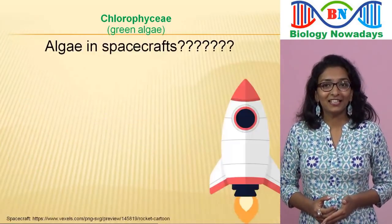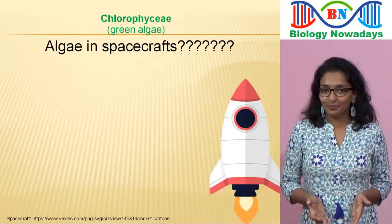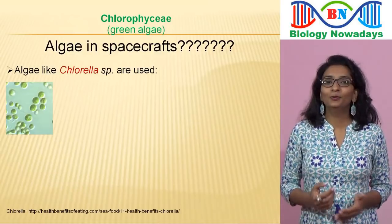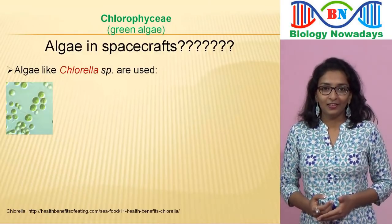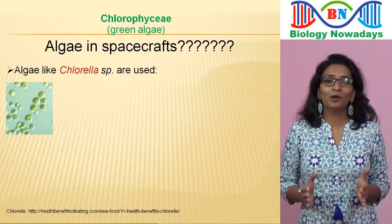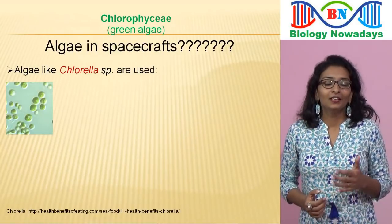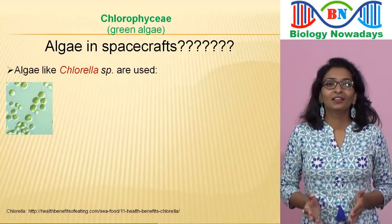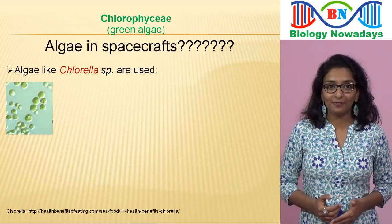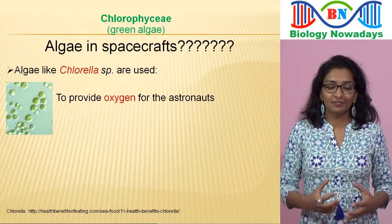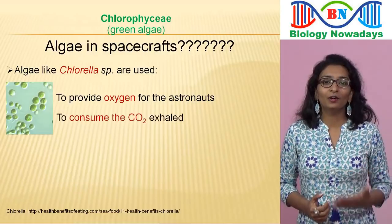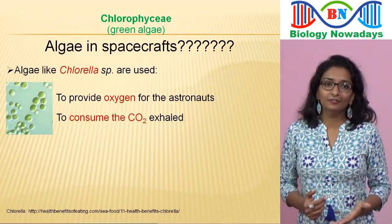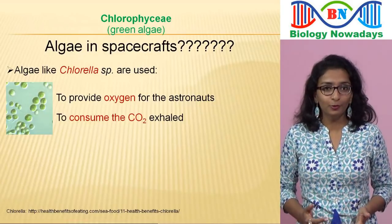Did you know that astronauts carry algae in spacecraft? Yes, they carry algae like Chlorella with them. Chlorella is a unicellular alga that gets its name from the high amount of chlorophyll it possesses — it contains more chlorophyll per gram than any other plant. The primary purpose of carrying Chlorella in spacecraft is to provide oxygen for the astronauts and consume the carbon dioxide exhaled by them. Another use of Chlorella is that it can serve as a potential source of food and energy.